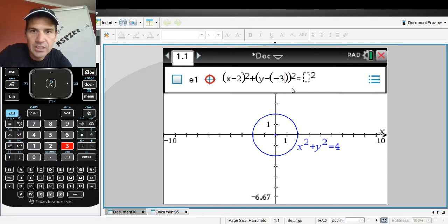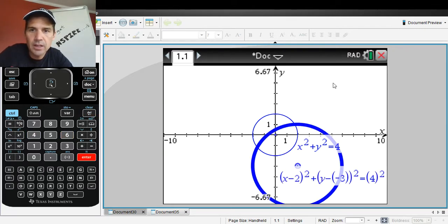And then let's say this one is going to have a radius of four, so it's sixteen. Oh, it's sorry, four squared, and that will be sixteen. And then we hit enter and there is that circle.